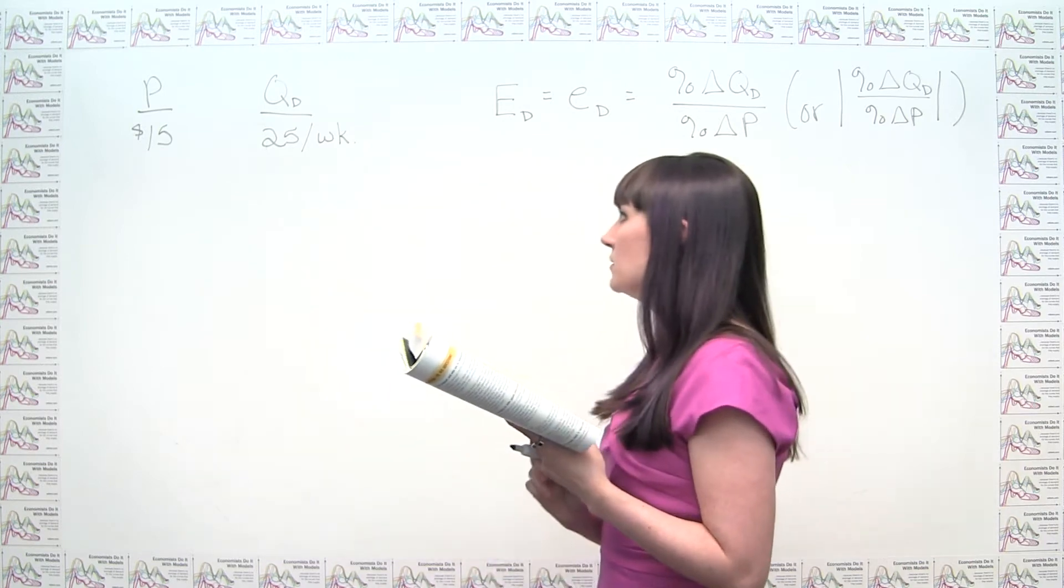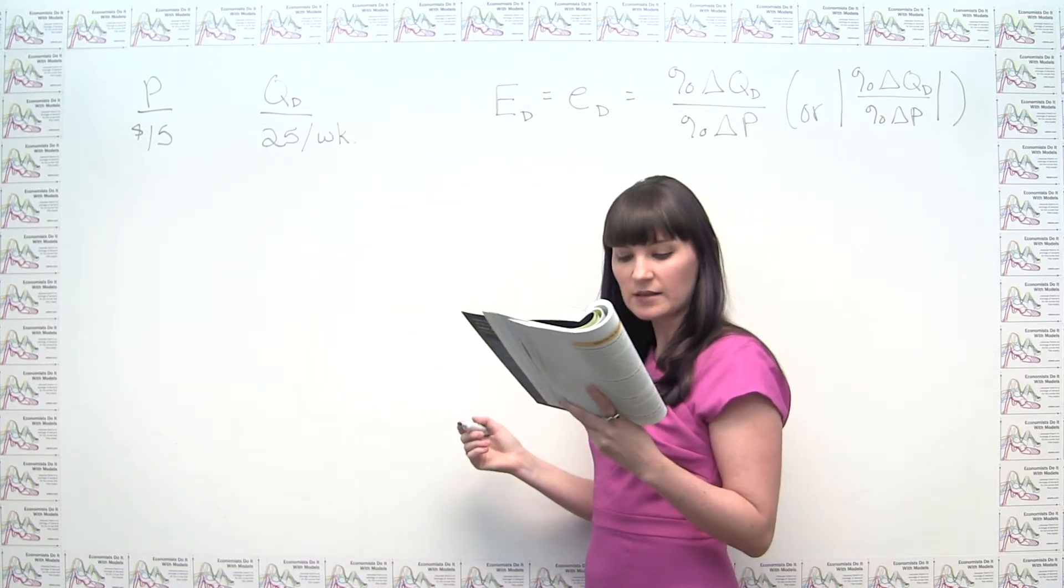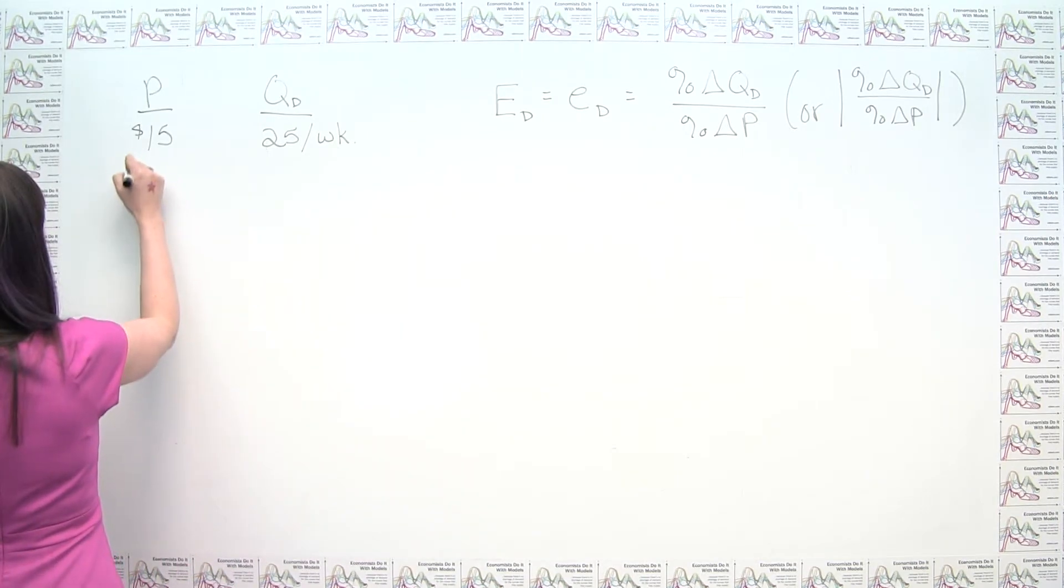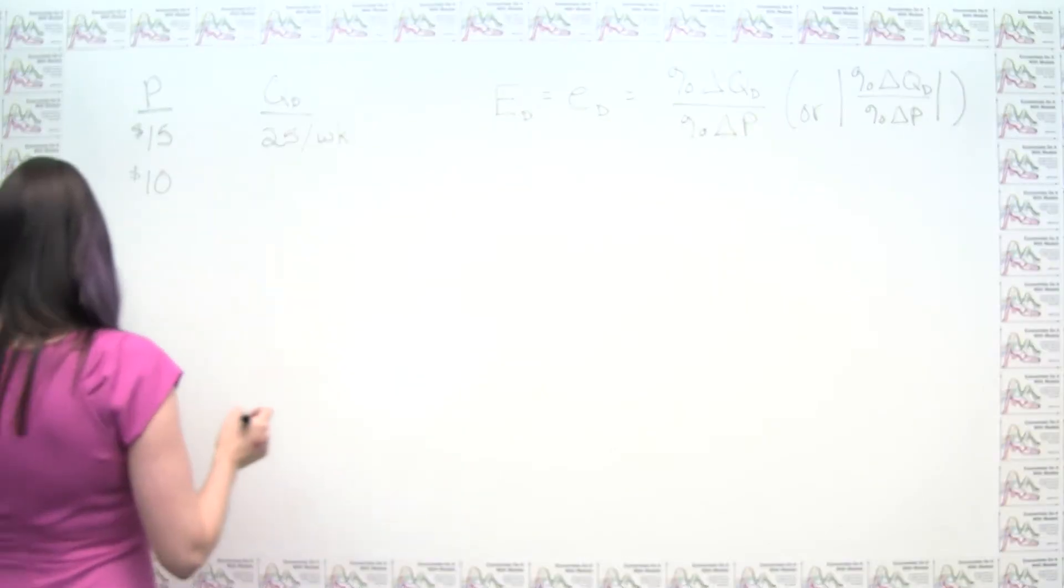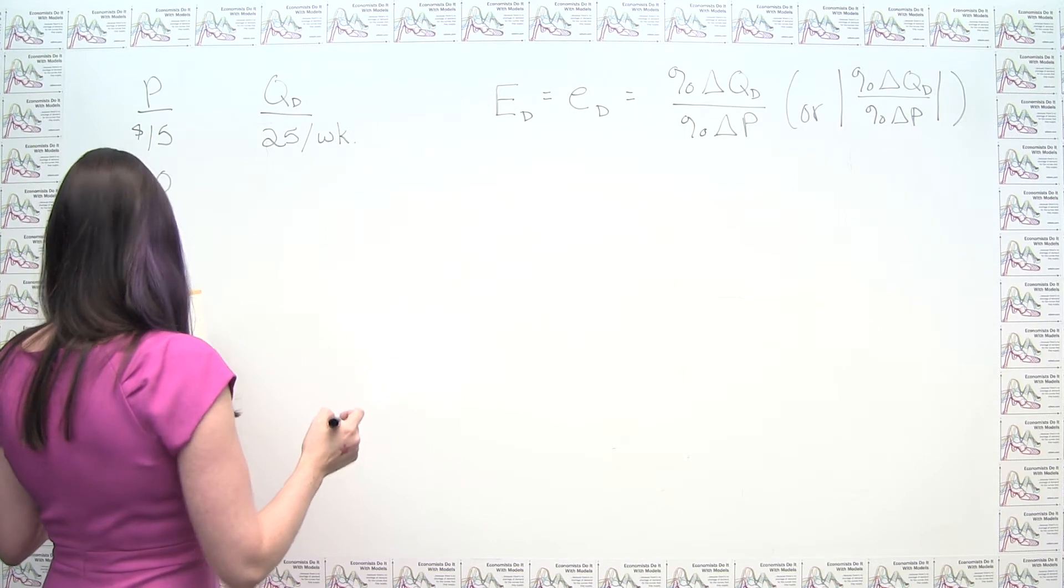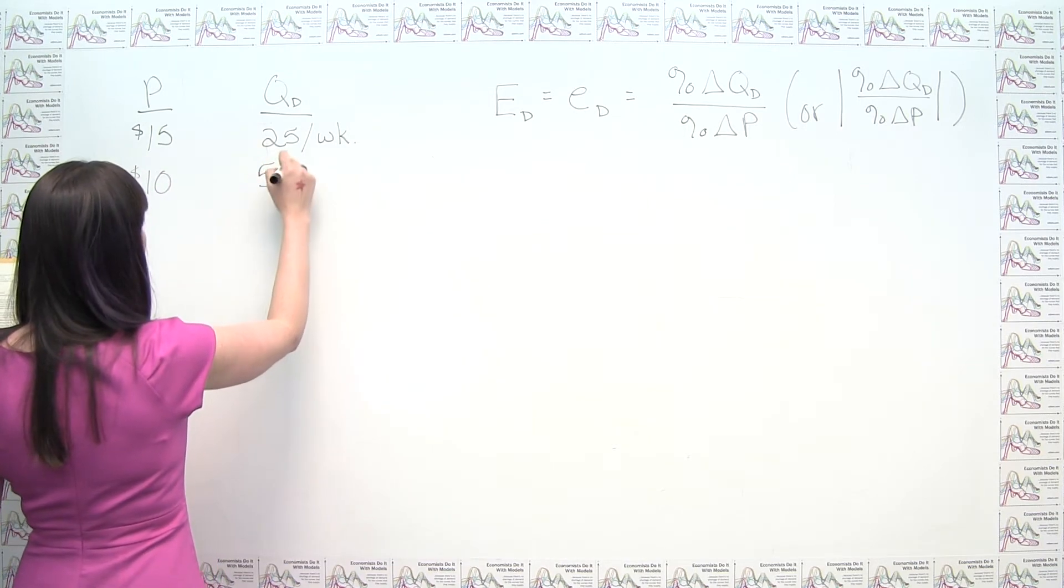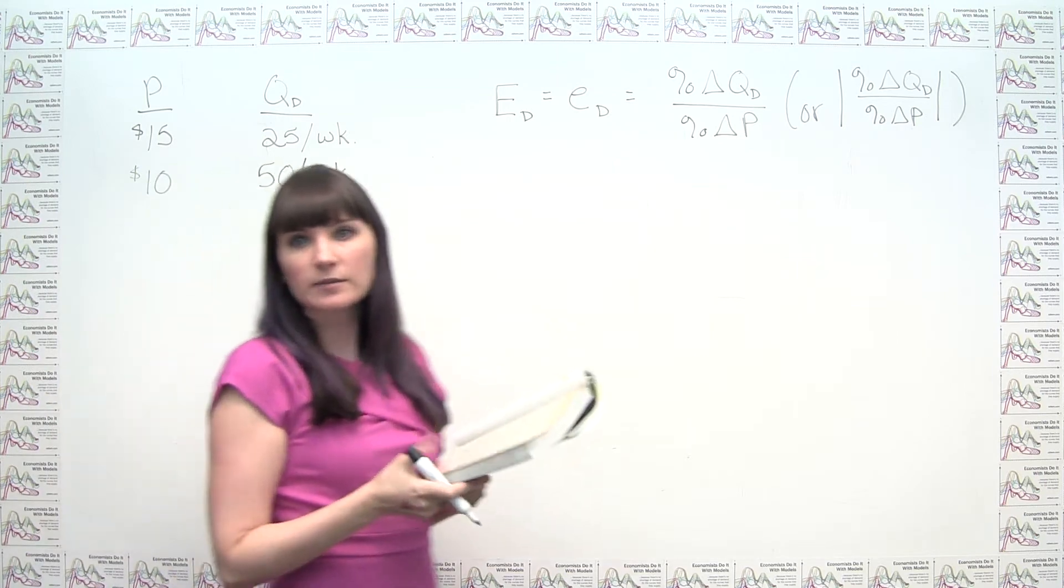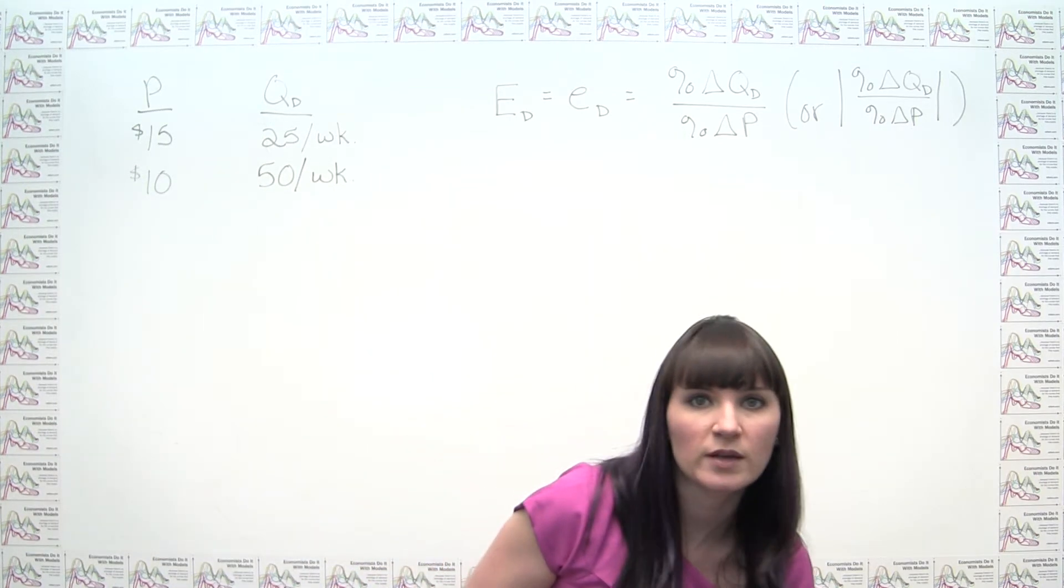So we can say that this is one option, but then they said that they marked the shirts down to $10. And when they did that, they could sell 50 t-shirts per week. So hopefully these numbers won't be too bad to calculate. And we can just go ahead and plug them into our formula.